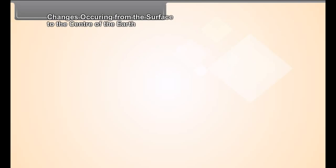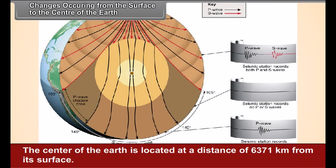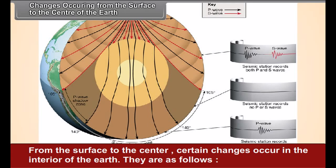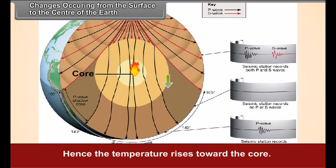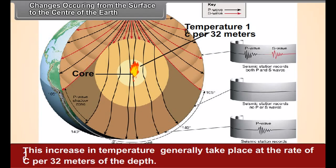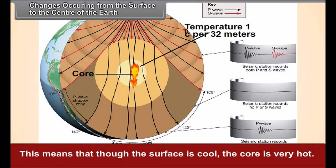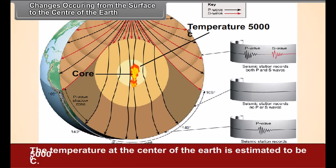Changes occurring from the surface to the center of the earth. The center of the earth is located at a distance of 6,371 kilometers from its surface. From the surface to the center, certain changes occur in the interior of the earth. In the interior of the earth, the temperature is higher, hence the temperature rises towards the core. This increase in temperature generally takes place at the rate of 1 degree Celsius per 32 meters of depth. This means that though the surface is cool, the core is very hot. The temperature at the center of the earth is estimated to be 5,000 degrees Celsius.